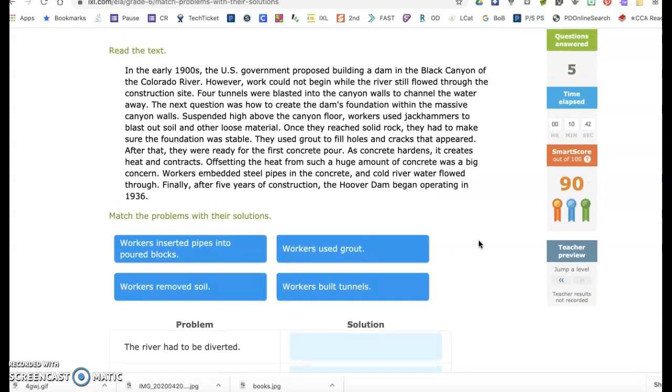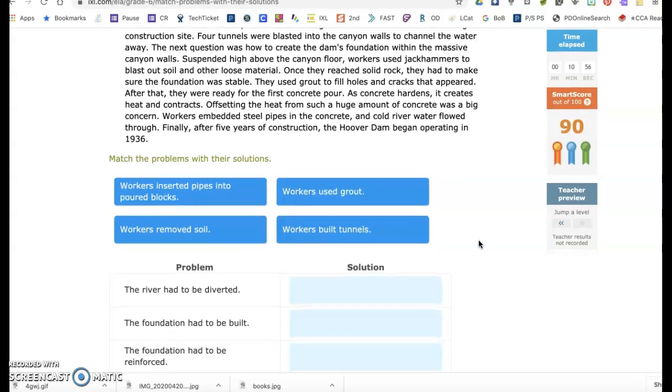In the early 1900s, the U.S. government proposed building a dam in the Black Canyon of the Colorado River. However, work could not begin while the river still flowed through the construction site. Four tunnels were blasted into the canyon walls to channel the water away. The next question was how to create the dam's foundation within the massive canyon walls. Suspended high above the canyon floor, workers used jackhammers to blast out soil and other loose material. Once they reached solid rock, they had to make sure the foundation was stable. They used grout to fill holes and cracks that appeared. After that, they were ready for the first concrete pour. As concrete hardens, it creates heat and contracts. Offsetting the heat from such a huge amount of concrete was a big concern. Workers embedded steel pipes in the concrete and cold river water flowed through. Finally, after five years of construction, the Hoover Dam began operating in 1936.